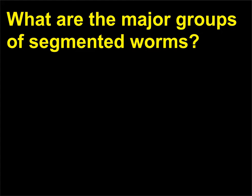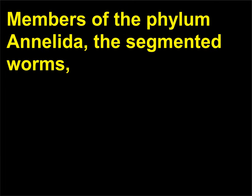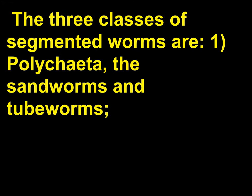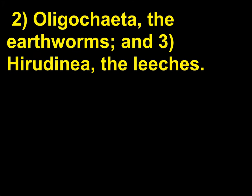What are the major groups of segmented worms? Members of the phylum Annelida, the segmented worms, have bilateral symmetry and a tubular body that may have 100 to 175 ring-like segments. The three classes of segmented worms are: 1. Polychaeta, the sandworms and tubeworms; 2. Oligochaeta, the earthworms; and 3. Hirudinea, the leeches.